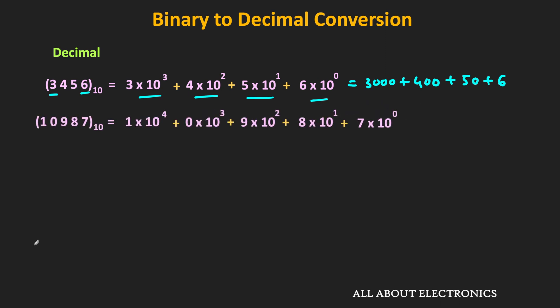Let's take one more example. Here the number is 10987. The digit 7 gets multiplied by the factor of 1, while 8 gets multiplied by the factor of 10. As we move towards the left, the weight of each digit increases by the factor of 10. The actual value is the summation of all these products, which equals 10987.